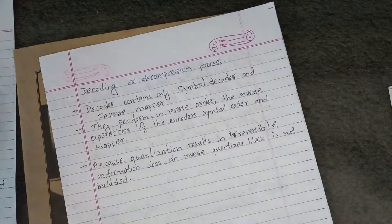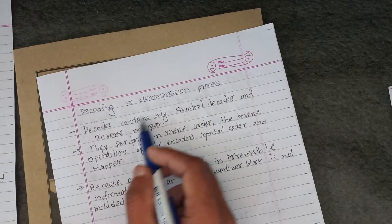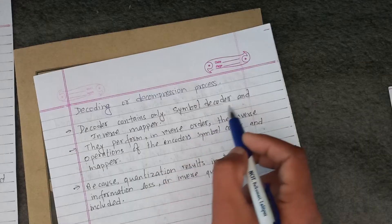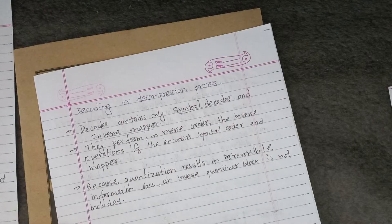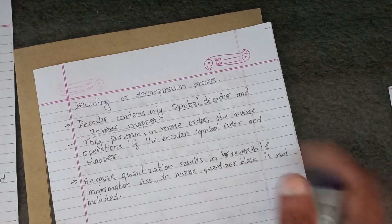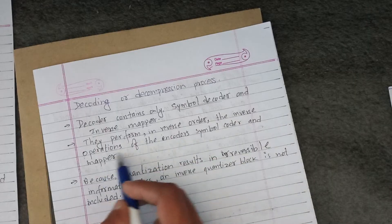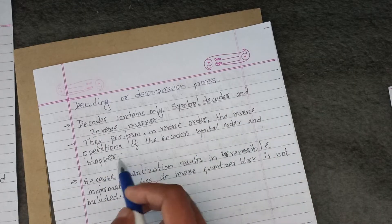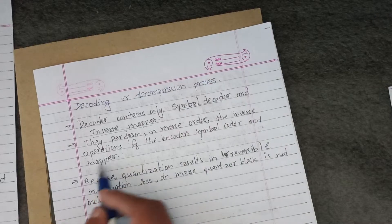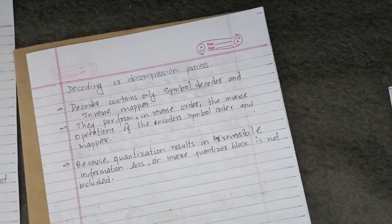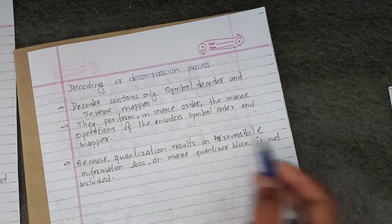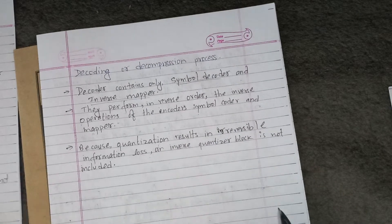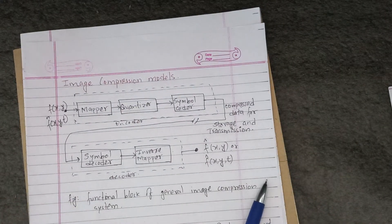The decoding or decompression process contains only two components: a symbol decoder and an inverse mapper. There is no inverse quantizer. They perform, in reverse order, the inverse operations of the encoder's symbol coder and mapper. The inverse quantizer block is not included because quantization results in irreversible information loss. Thank you for watching this video.